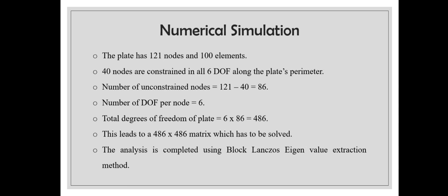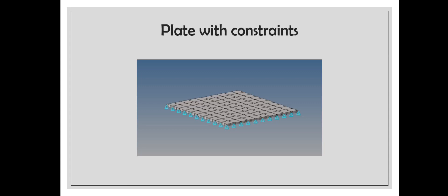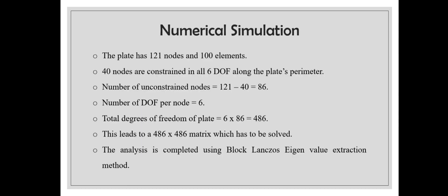Now we're going to perform the numerical simulations. The plate has a total of 121 nodes and 100 elements, but there are certain nodes that are constrained and certain nodes are unconstrained. We can find the unconstrained nodes by subtracting the constrained nodes. 121 is the total number of nodes, 40 are the constrained nodes, so the total number of unconstrained nodes is 86.